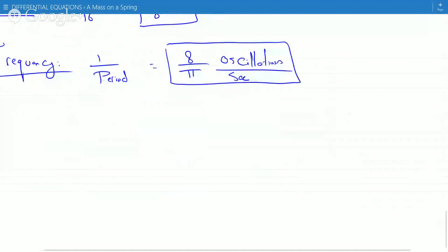Right, so here they want us to figure out if the system, as the motion of the mass on the spring, is underdamped, critically damped, or overdamped.